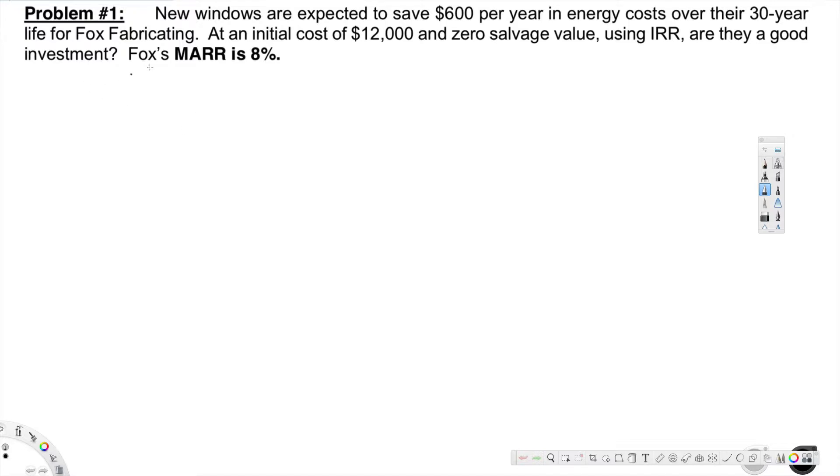Okay, now let's see how to find out. Here, initial cost is $12,000, so $12,000 right here. That is equivalent to $600 per year in energy cost, so 600 multiply by P/A.